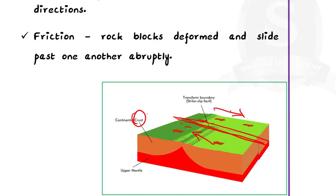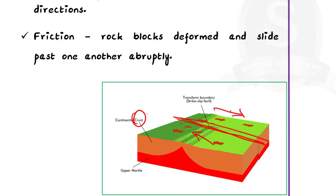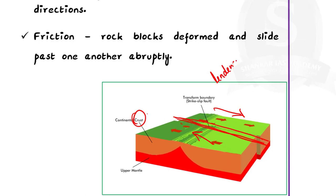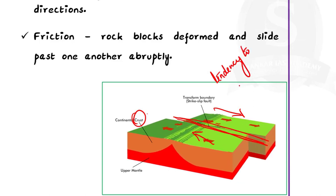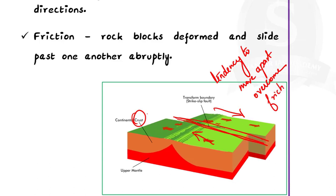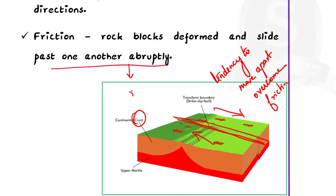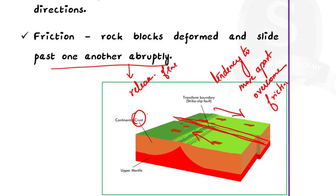But however, their tendency to move apart at some point of time overcomes the friction. And as a result of friction, these blocks get deformed and eventually they slide past one another abruptly, that is quickly. And this causes a release of energy and the energy waves travel in all directions. This abrupt or quick slide past event causes the shaking of the earth.